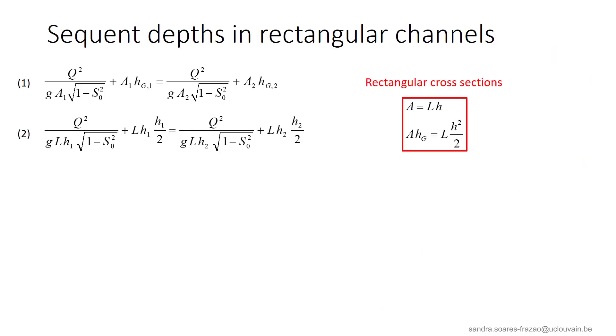In the case of rectangular cross sections, things simplify significantly. Equation 1, expressing the equality of the specific forces, can be expressed as in equation 2, because we just have simplified the static moment and the area for the rectangular cross section.